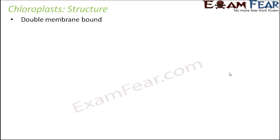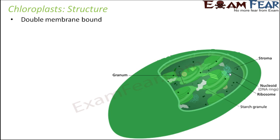The chloroplast is a double membrane bound structure, so there are two membranes: one is the outer membrane and the other is the inner membrane. This membrane system helps to trap solar energy. Chlorophyll is present inside the chloroplast, and we will see later how this membrane helps to absorb solar or light energy.